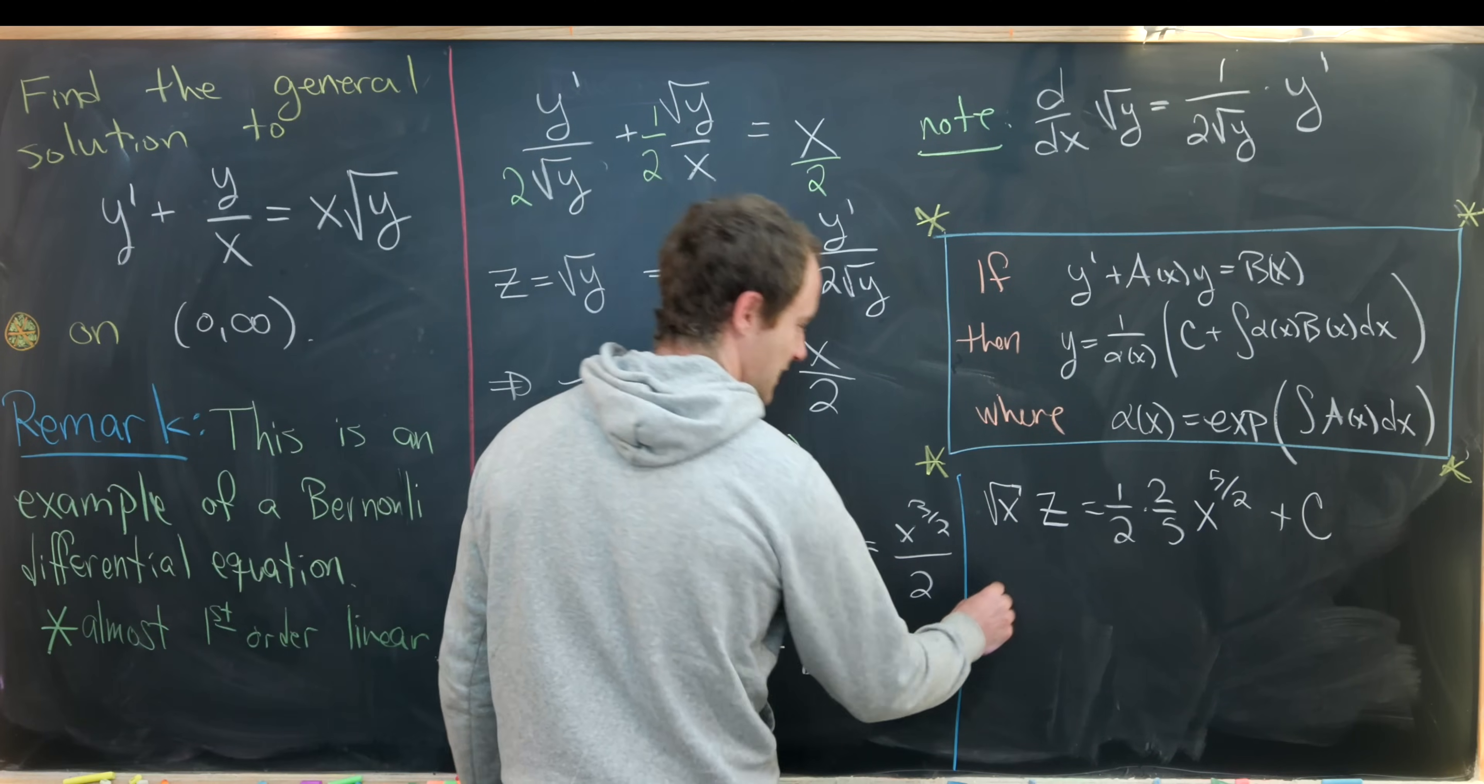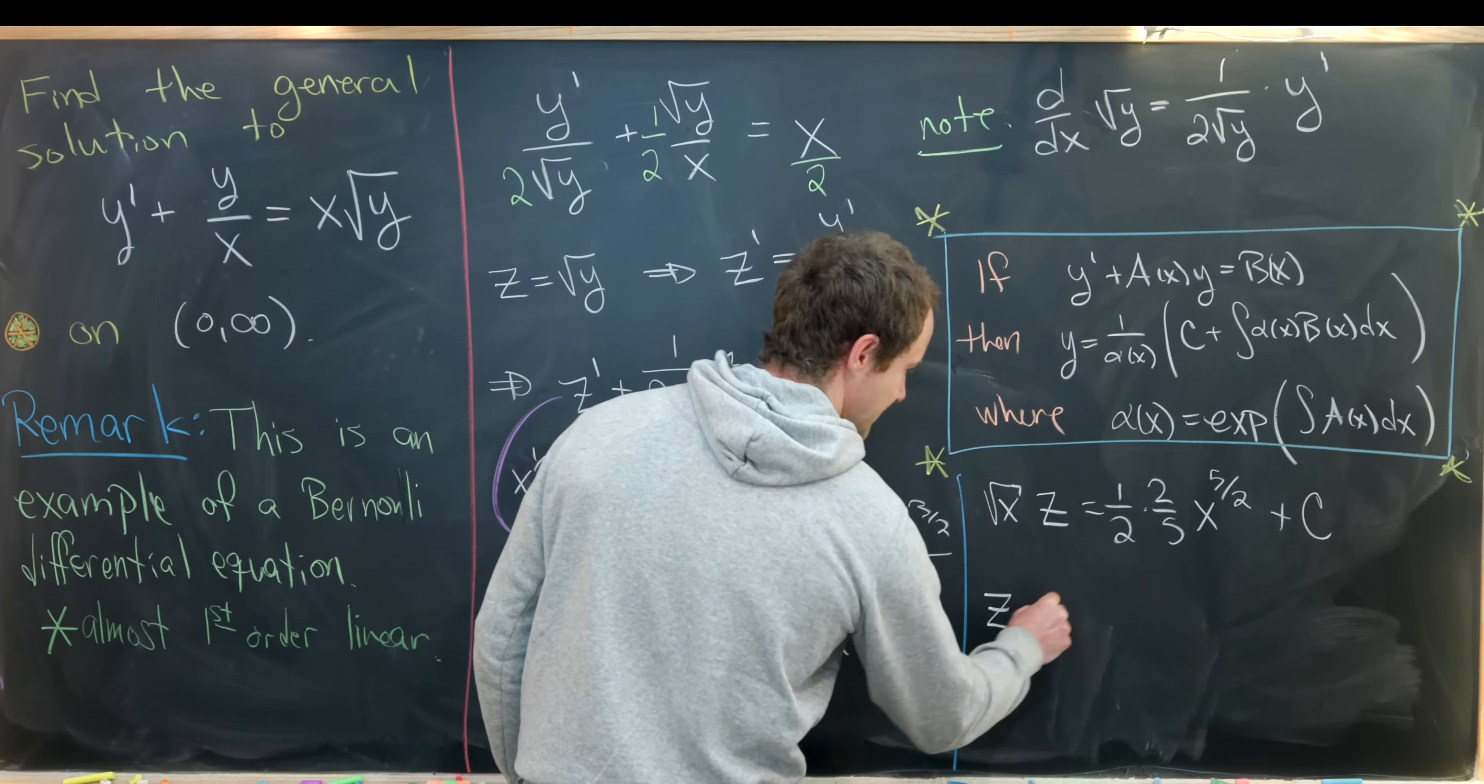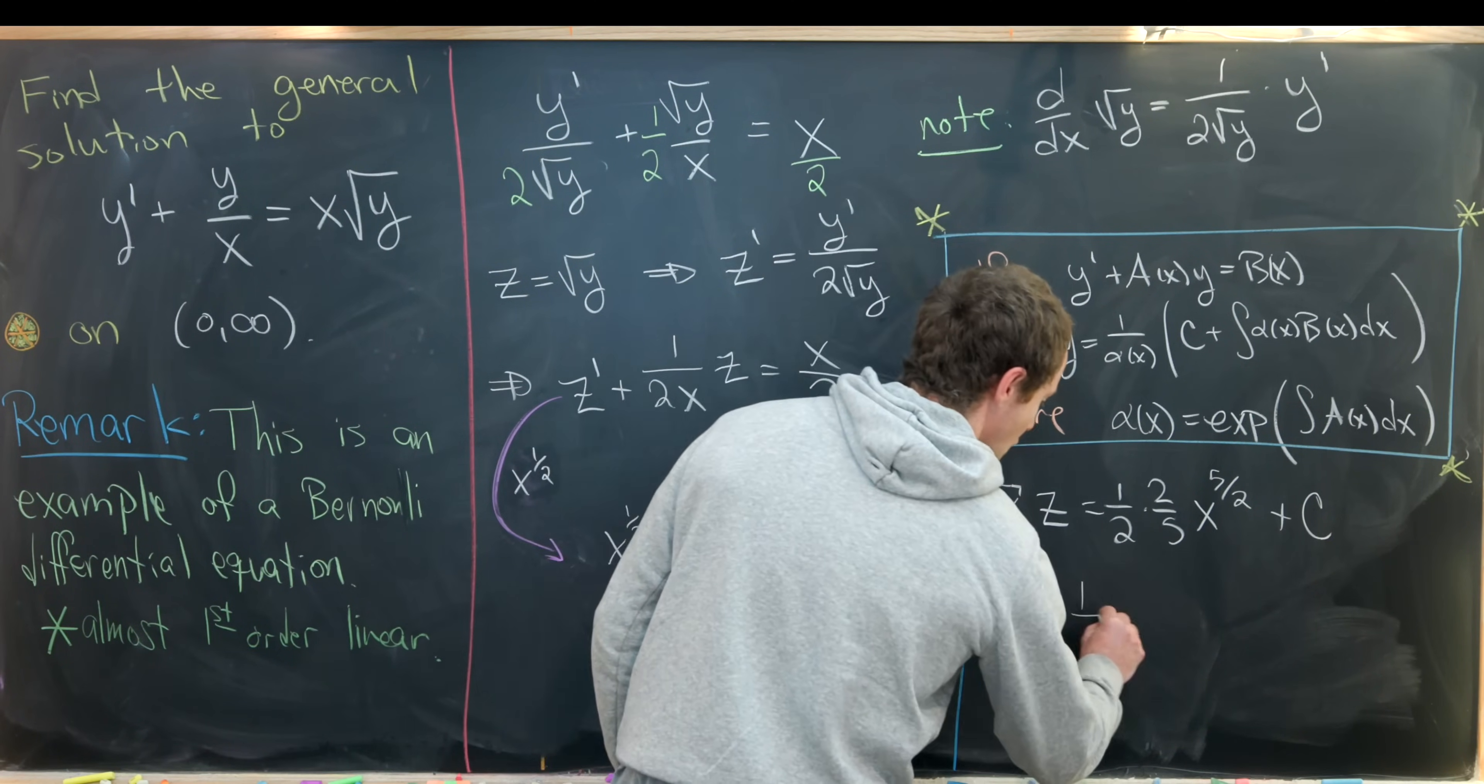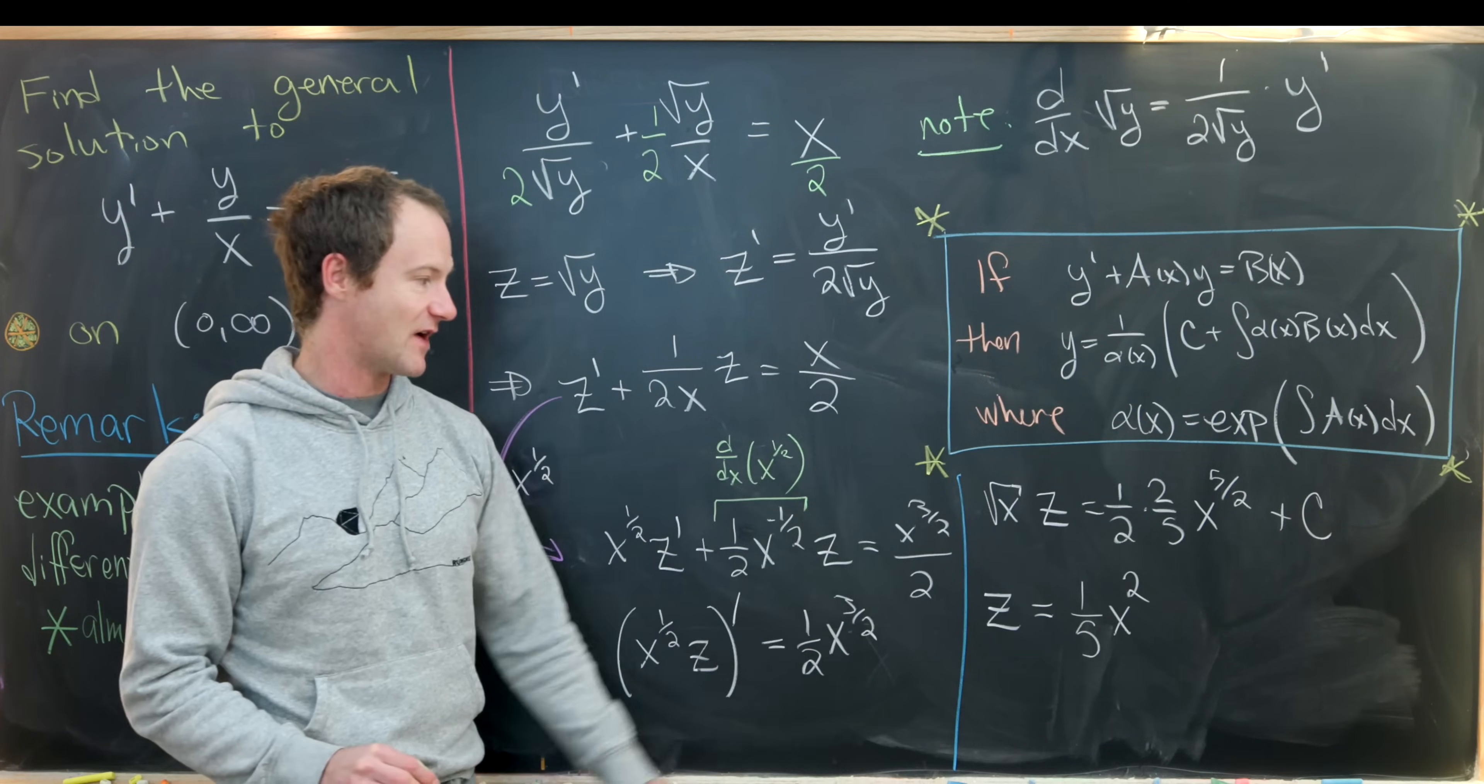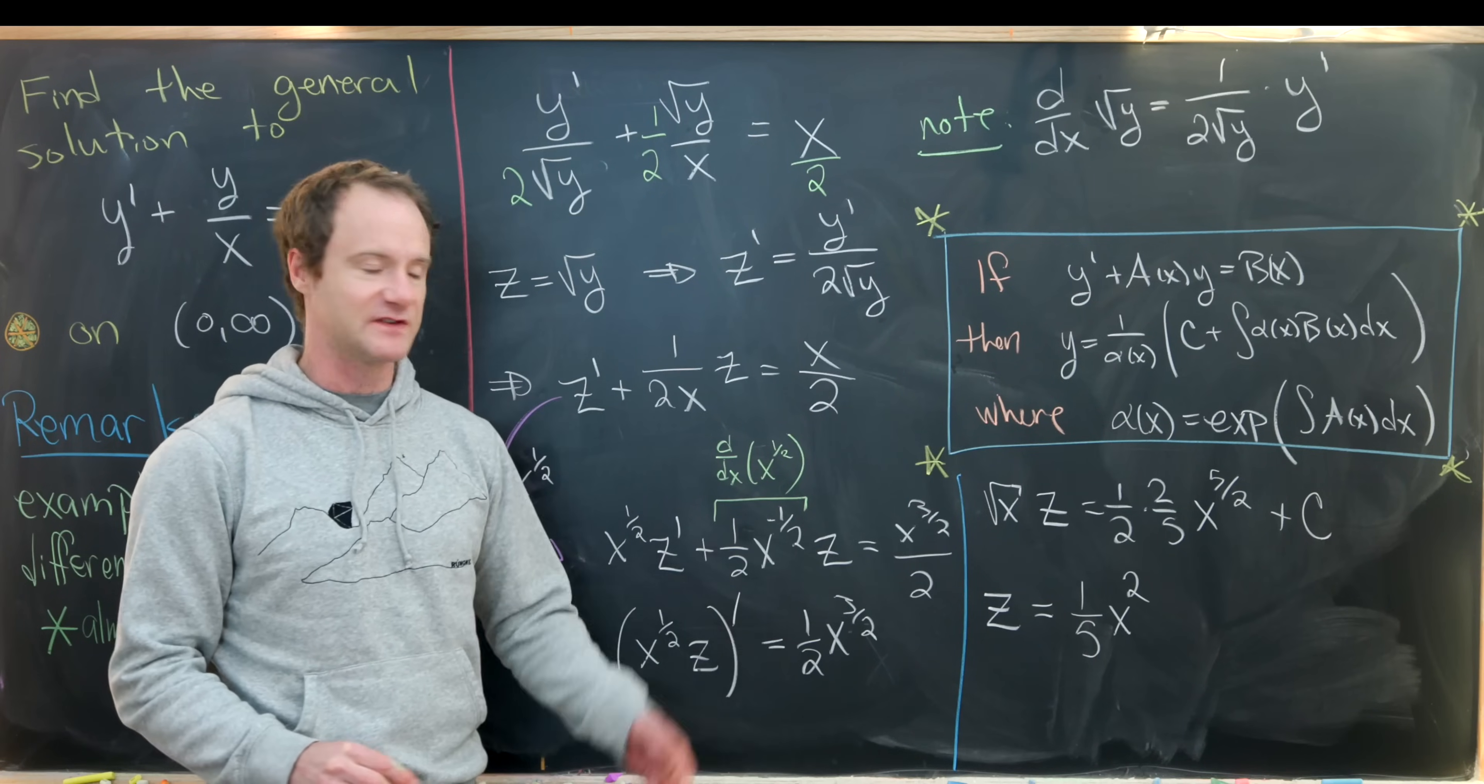Next we can divide both sides by the square root of x. We're left with z equals one fifth x squared, since x to the five halves divided by x to the one half is x to the four halves, which is x squared, plus a constant over the square root of x.